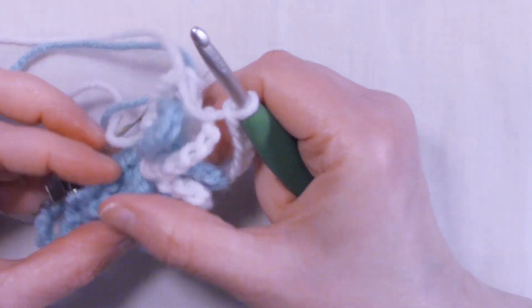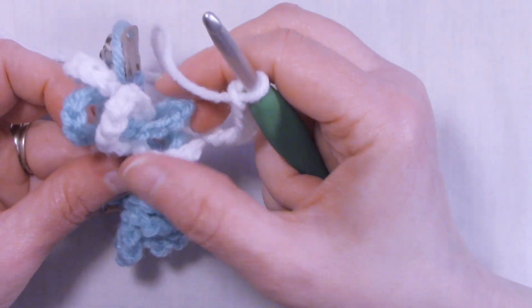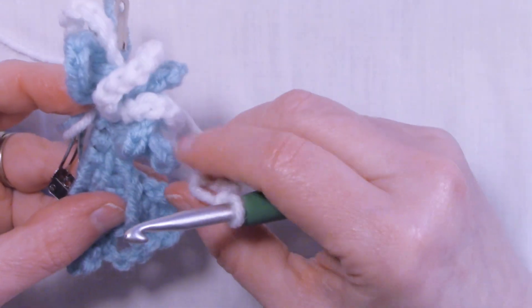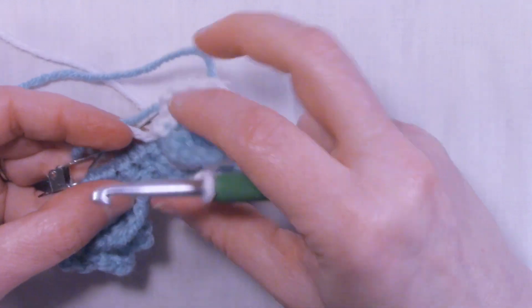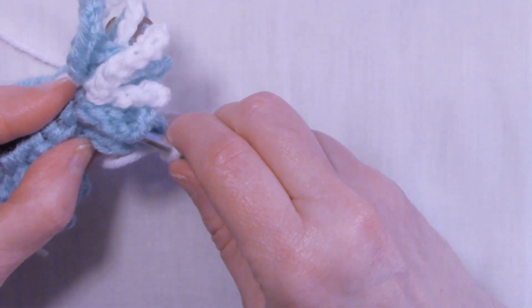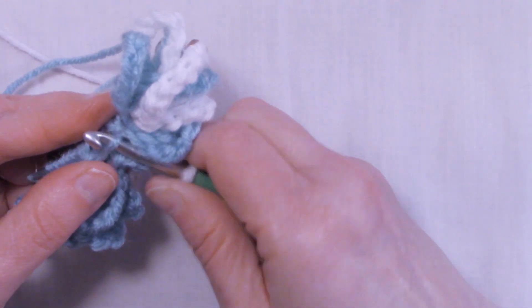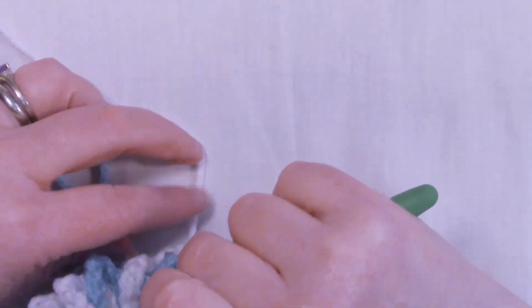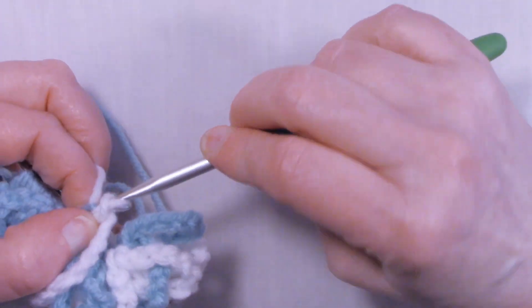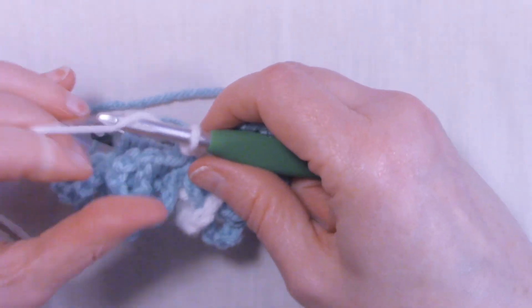And we're going to chain 10 again. And the free loop should be over on the other side this time. So we're actually weaving the white or your second color, whatever your second color is, into the other loops. And there it is, right there. That's a free loop. This one is the free loop. So continue doing this to get down to the other side, to the end of the barrette, and I'll meet back up with you at the end.